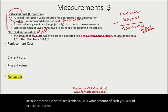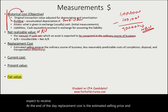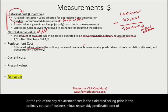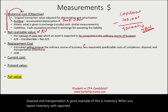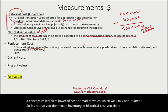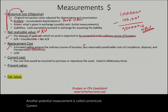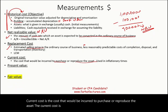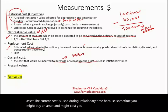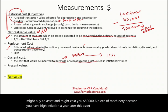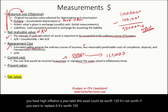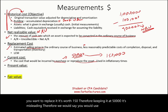Replacement cost is the estimated selling price in the ordinary course of business minus reasonably predictable costs of completion, disposal, and transportation. A good example is inventory, reported at replacement cost under the concept of LCM — lower of cost or market. Current cost is the cost that would be incurred to purchase or reproduce the asset today. It is used during inflationary times; for example, if a machine bought for $50,000 would cost $150,000 to replace due to inflation, keeping it at $50,000 is misleading. Thankfully in the US, inflation is less of a concern, but it remains a measurement method.